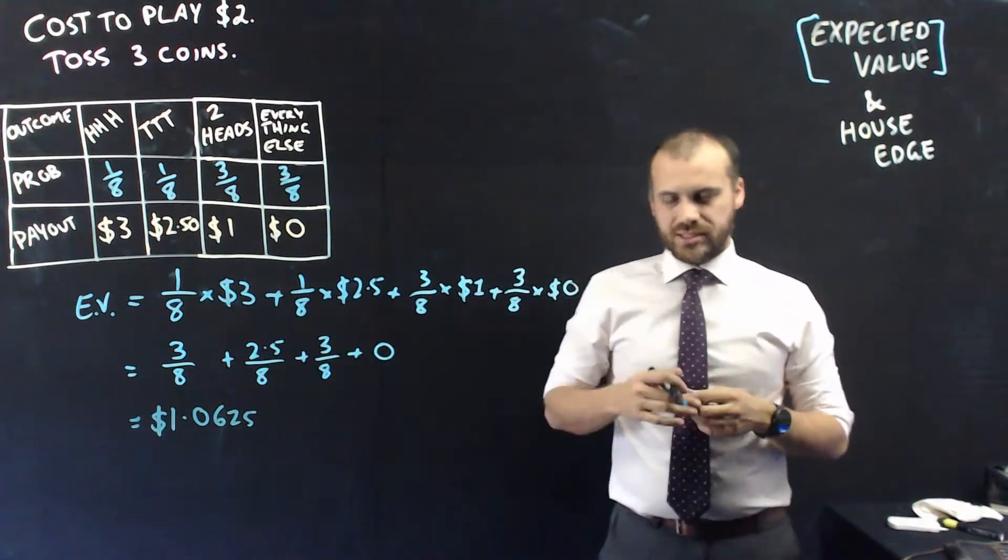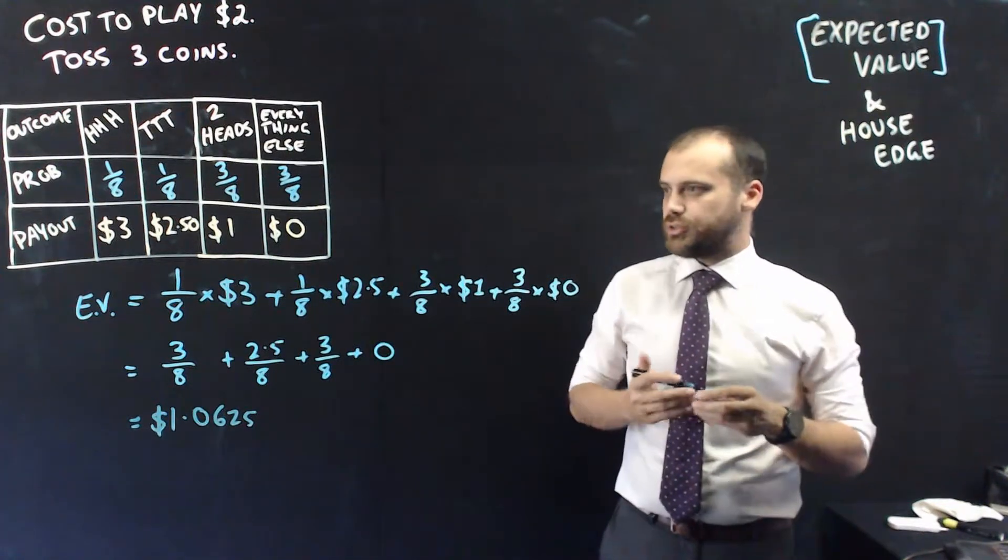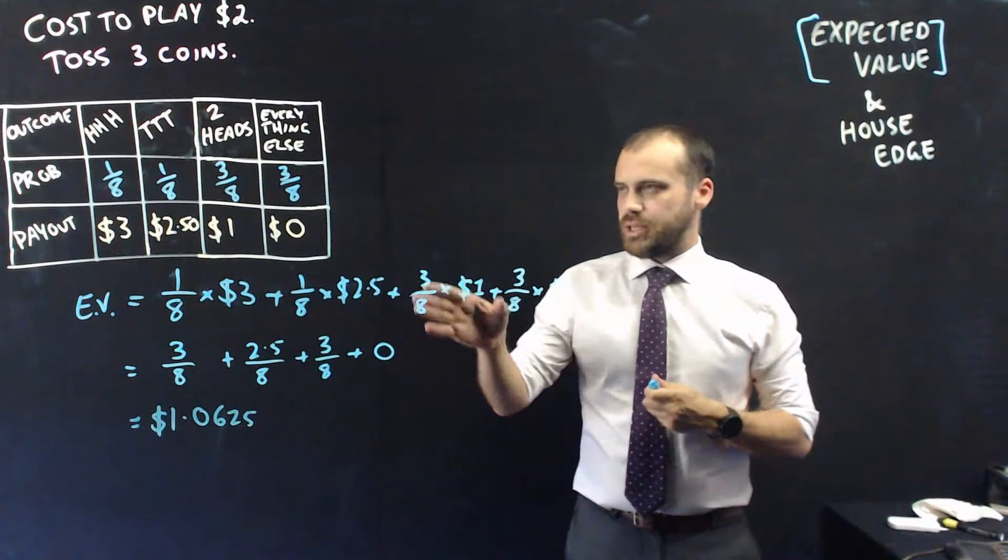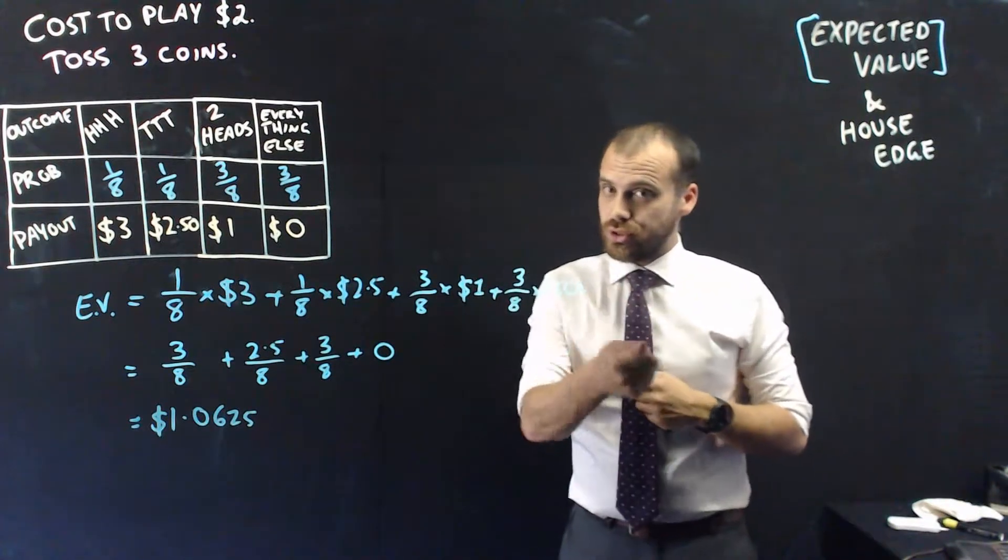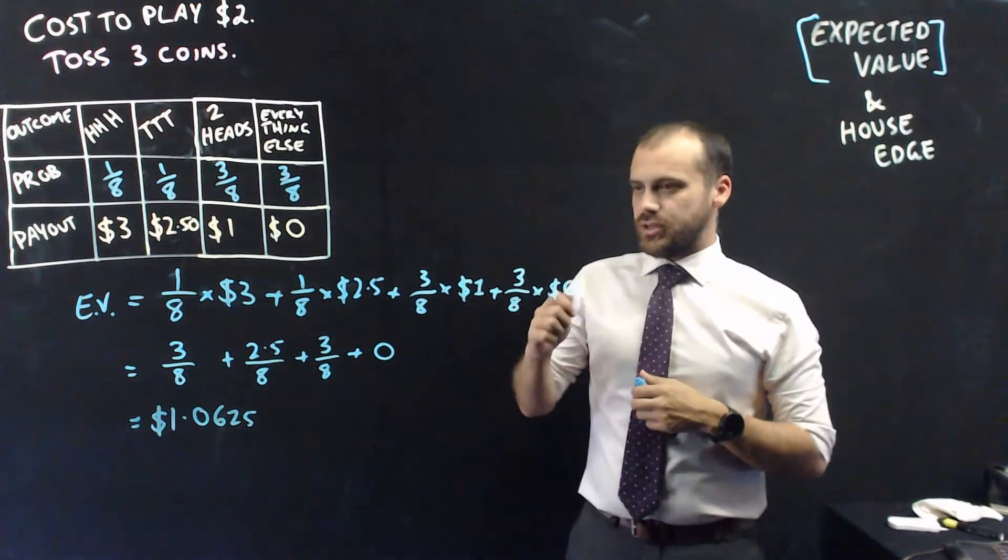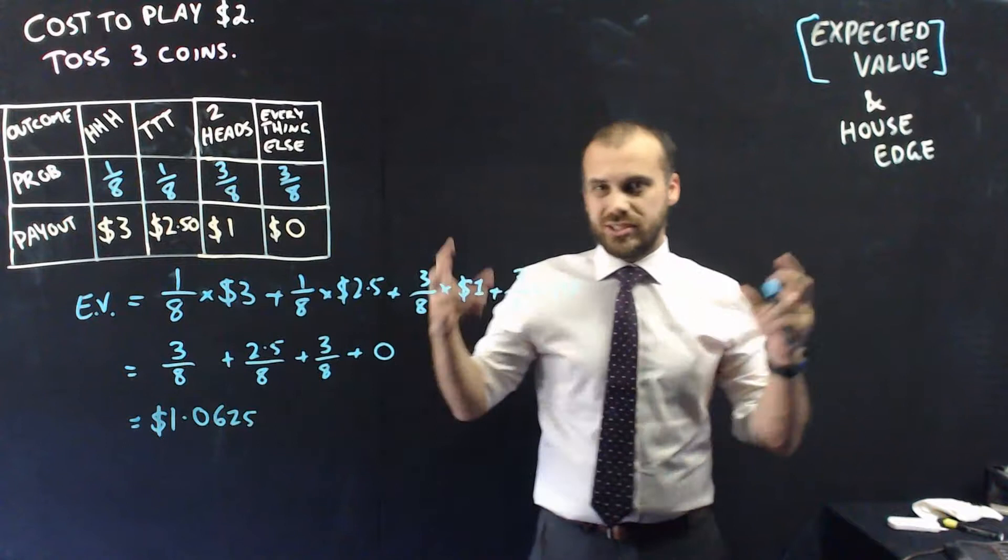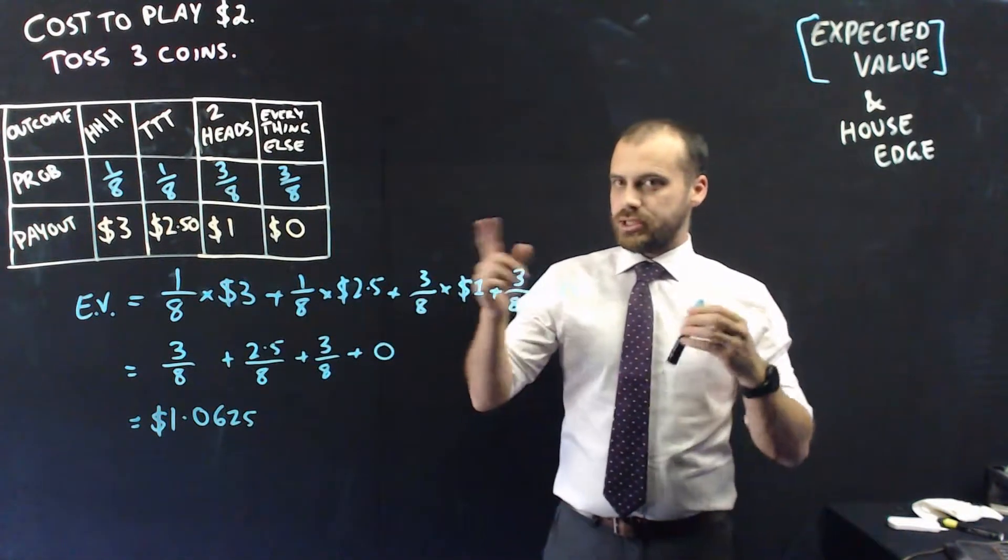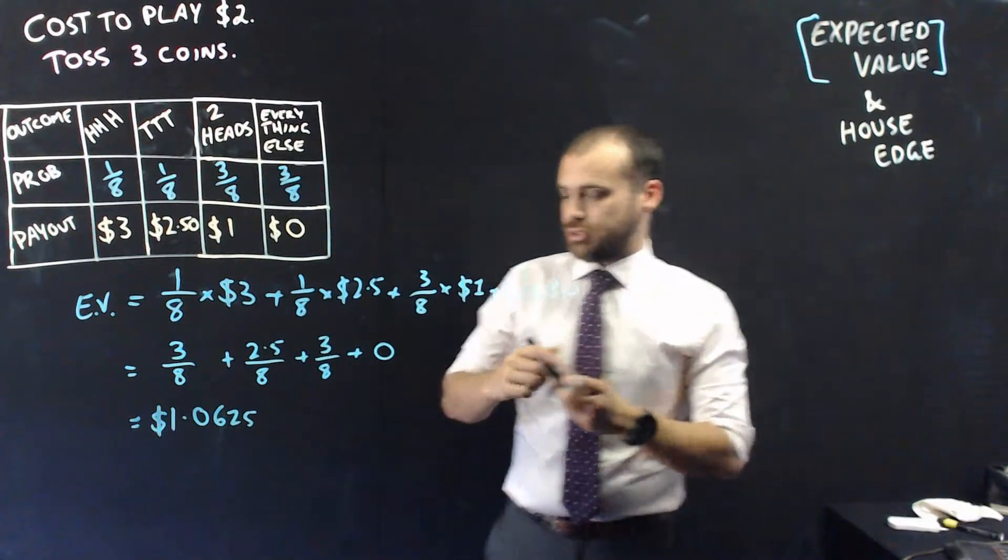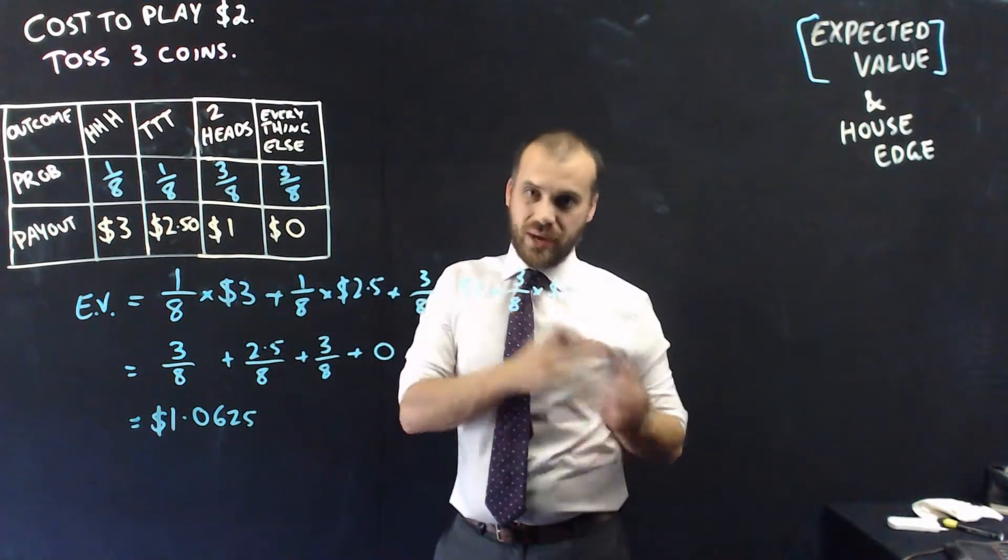In casinos, these decimal points matter, even though you're not paying out quarters of a cent. The expected value still holds. So what does that mean? It means every time a player plays this game, pays $2 to play, the casino can expect to pay that player $1.0625 approximately back.